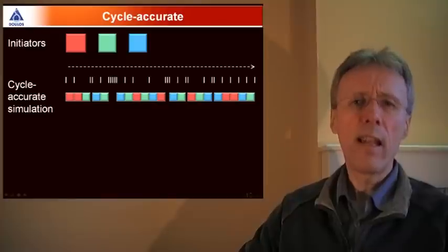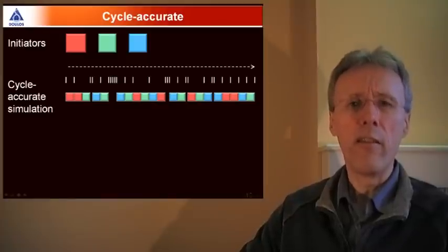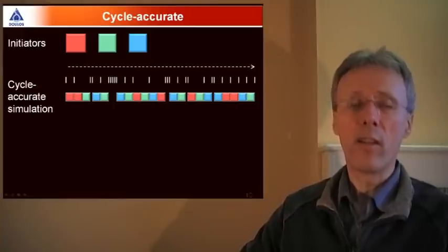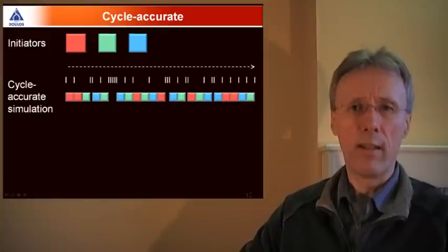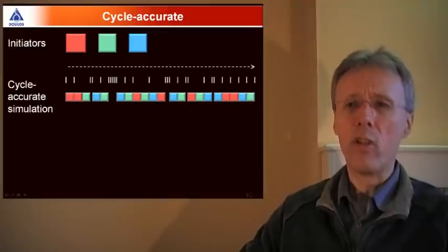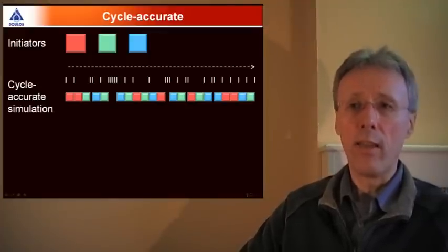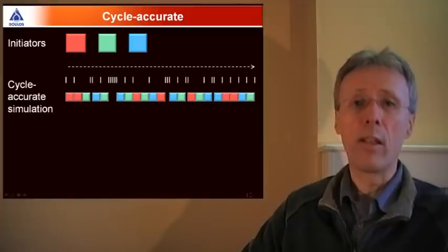So a cycle accurate simulation is like a relay race where the runners keep passing the baton from one to another. So each initiator gets to run just for one clock cycle in a cycle accurate simulation. And at the end of the clock cycle, the initiator passes the baton to the next initiator that runs for its turn. So each piece of work that's to be done in the model happens in just the right clock cycle, but there's a lot of context switching and that consumes lots of CPU time and slows down simulation.